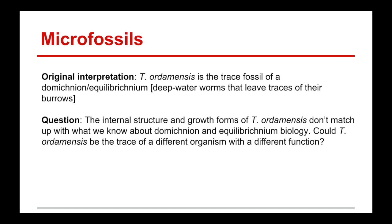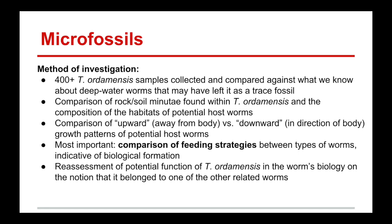The way they investigated this organism was by collecting over 400 samples of Tassilia ordemensis from both Antarctica and Tierra del Fuego. These were collected and compared against what we know about deepwater worms that may have left such a trace fossil. They compared the rock and soil minutiae found within the fossil and the composition of the habitats of potential host worms, and most importantly, they compared the feeding strategies between deepwater worms and shallow water worms, which would be deeply indicative of the biological formation of those worms. Reassessment of the potential function was natural once it was noted that it belonged to a different related worm.